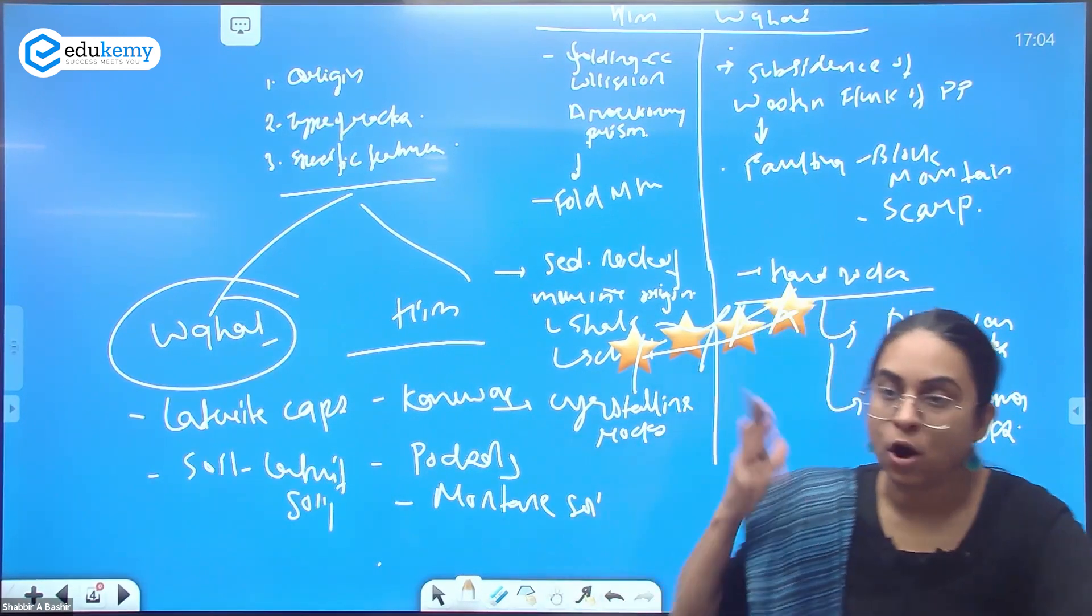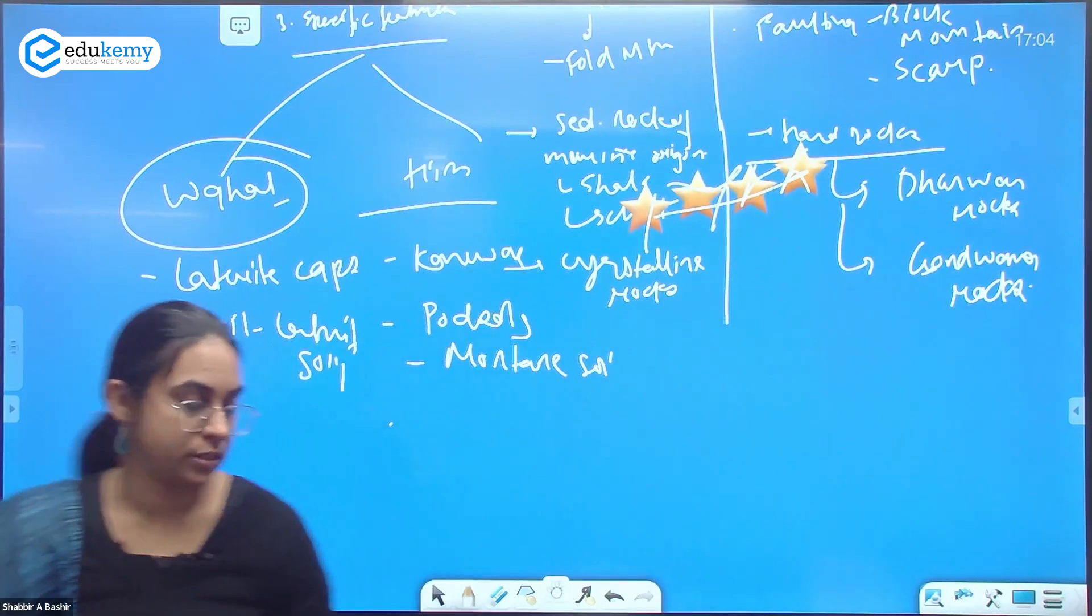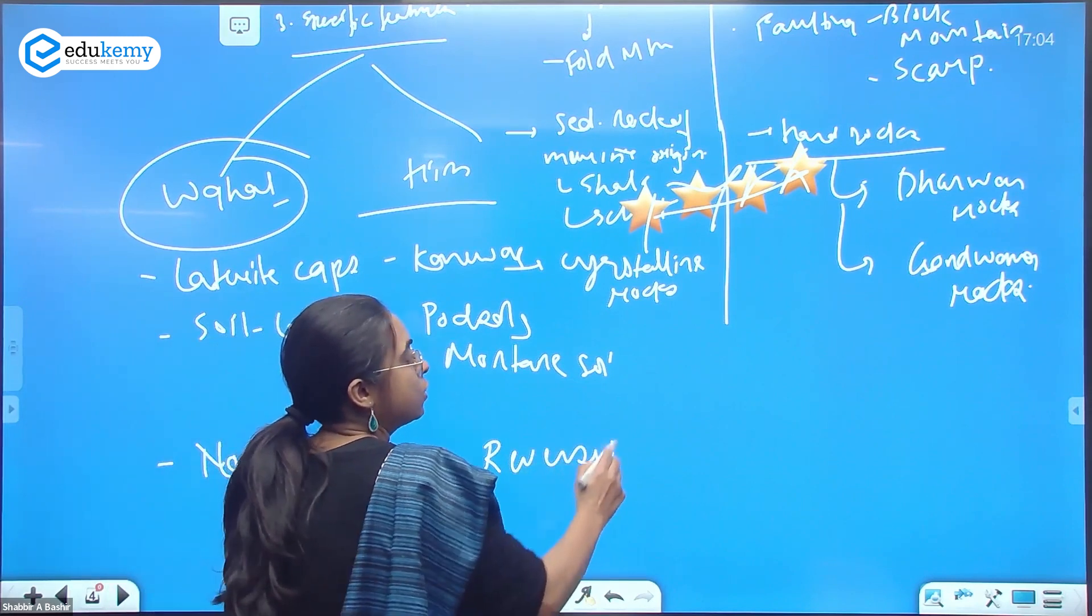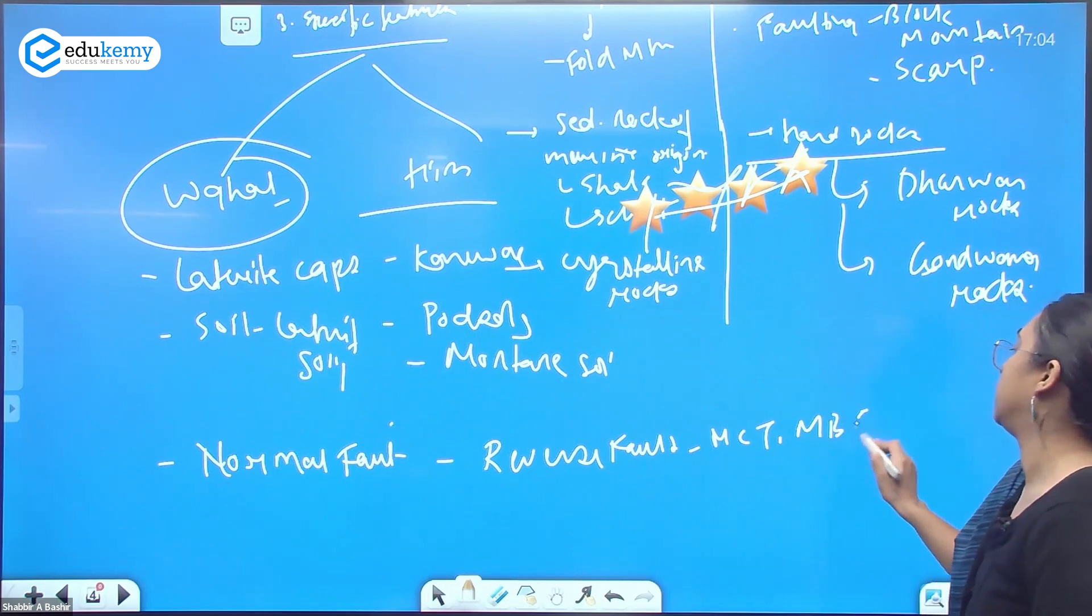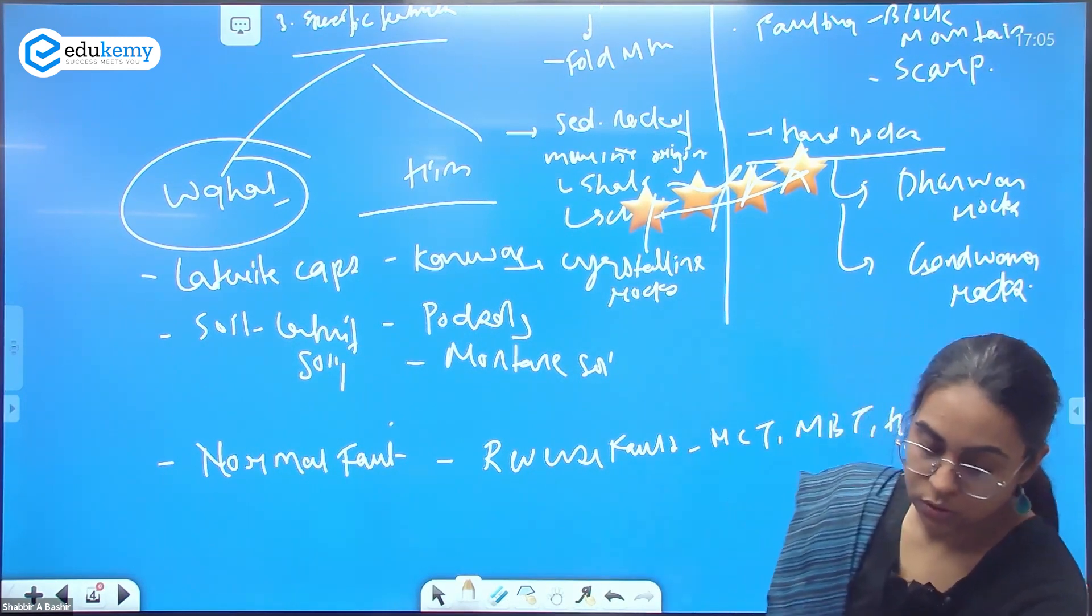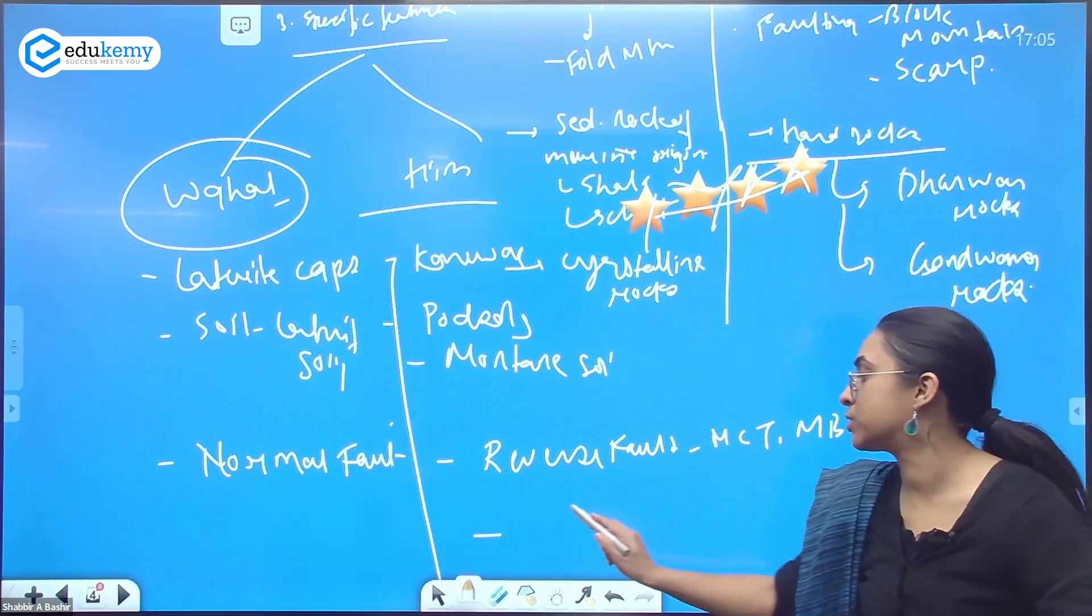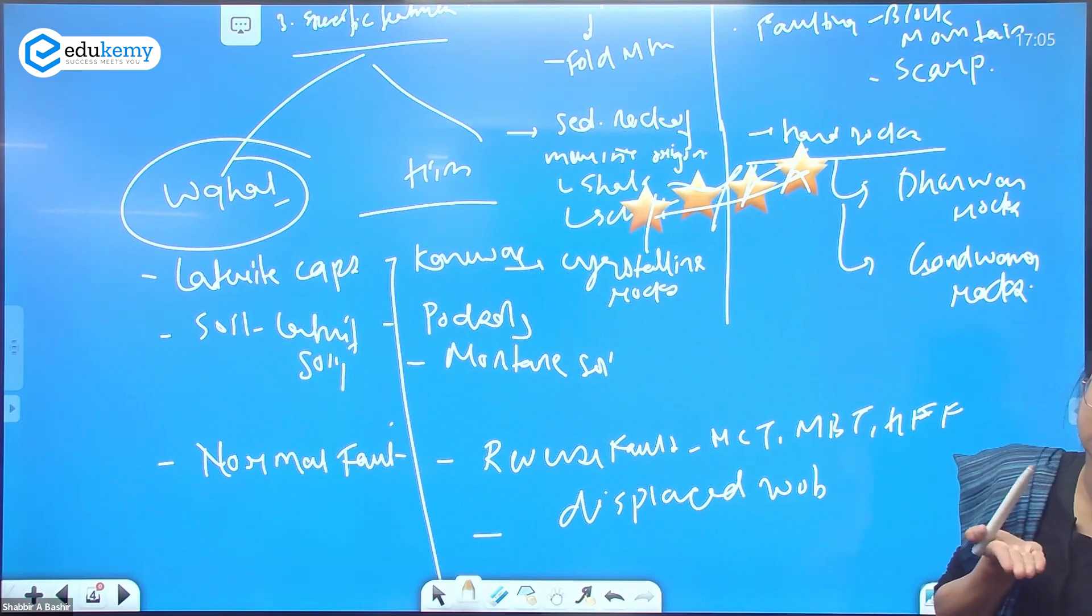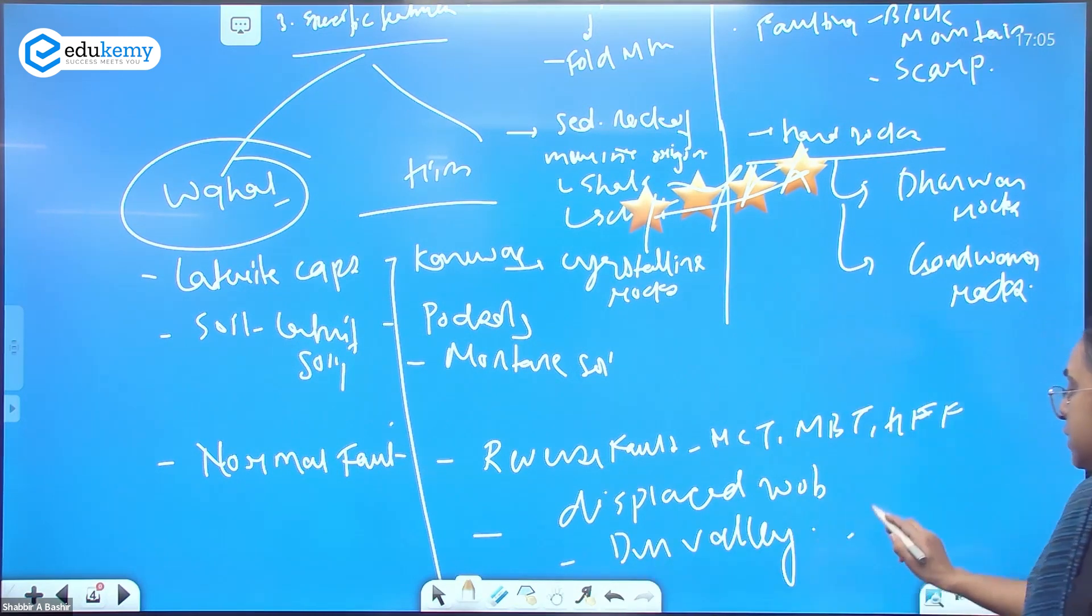If I talk about faults, in your Western Ghats you will have normal faults, whereas in the Himalayas we will have reverse faults like MCT, MBT, HFF. These are in the Himalayas. They also have displaced roots. The roots of middle Himalayas are below the great Himalayas, roots of Shivaliks are below the middle Himalayas. So you also have dual values. These are tectonic zones.